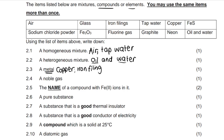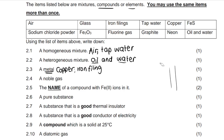For a noble gas — noble gases are the last group on the periodic table, the last column. So a noble gas from the list, if you look carefully at the options, is neon.